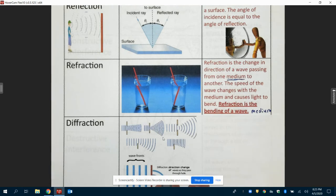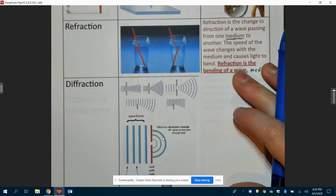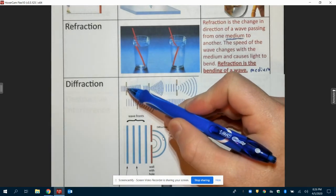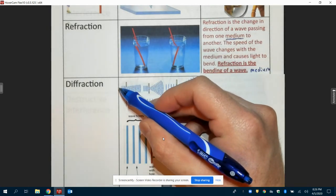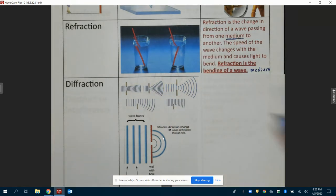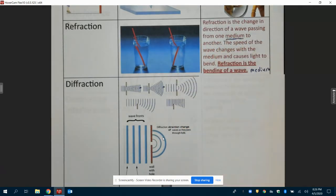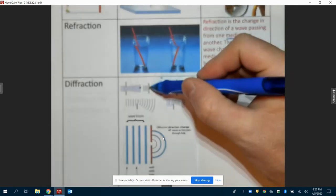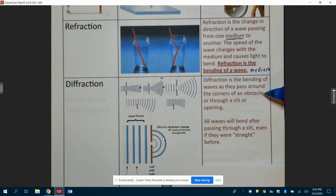Diffraction is similar because we're still talking about the bending of a wave. But what's different here is that this bending occurs specifically when we send a wave through a slit or a gap or around a corner. So what diffraction is, is the bending of waves as they pass around the corners of an obstacle or through a slit or opening.